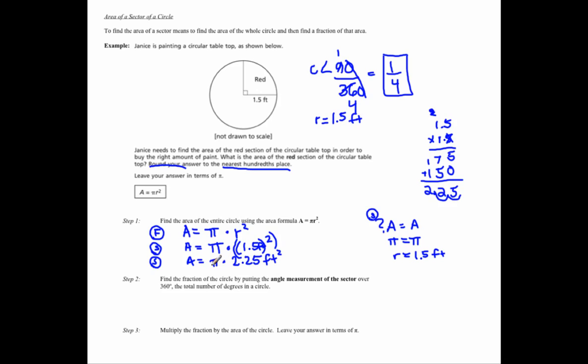So I have pi times 2.25 feet squared. Group that. Area of the entire circle is 2.25 pi feet squared. Now that's the area of the entire circle.